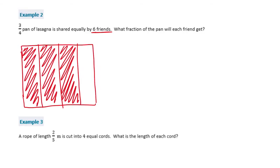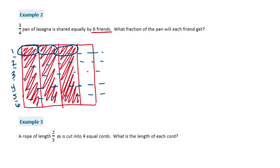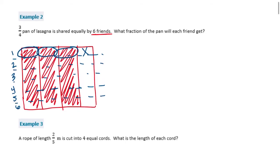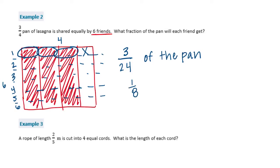Split into 6 equal pieces — friend 1, 2, 3, 4, 5, and 6. Each friend gets 1 piece. We're not counting the empty piece because they only ate 3/4 of the pan, not all 4/4. So each friend gets 3 parts out of a 4-by-6, which is 24 total parts — that's 3/24, which simplifies to 1/8. Either form will work.